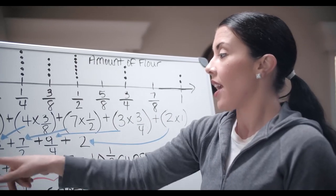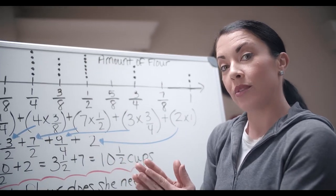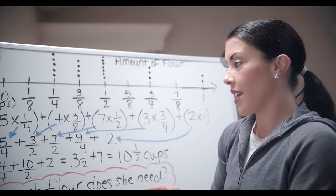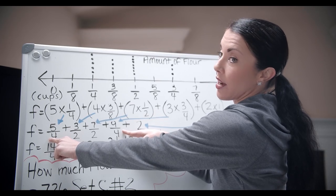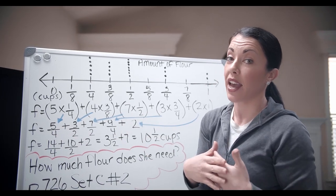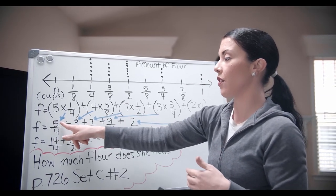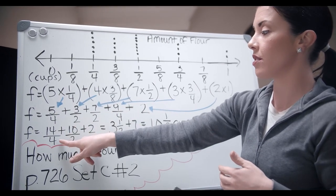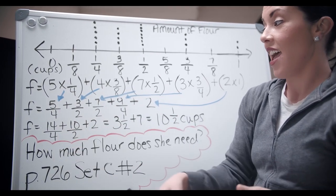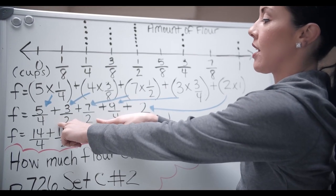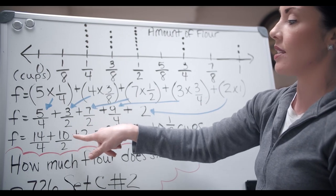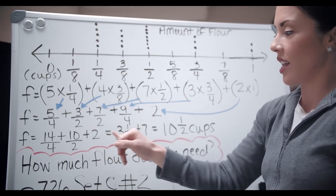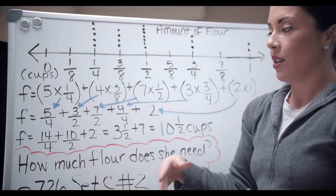When I did that, I kind of combined like terms again. We talked about that the other day. I have two fractions here that have the denominator of four. So all I have to do is add the numerators together. So five fourths plus nine fourths is fourteen fourths. And luckily, I also have two other fractions that have the same denominator. Three halves plus seven halves is ten halves. And then I just got to tack on my whole number two.